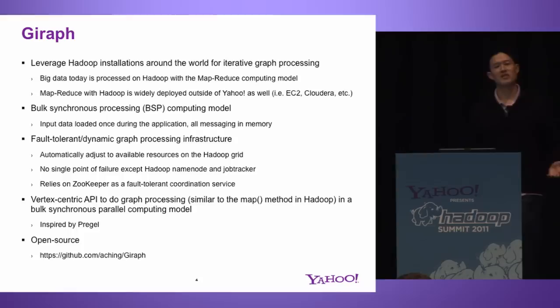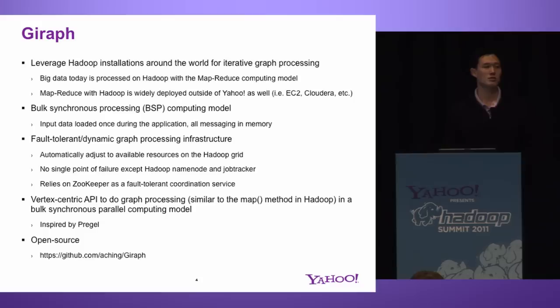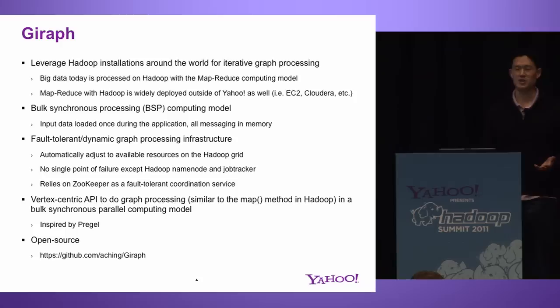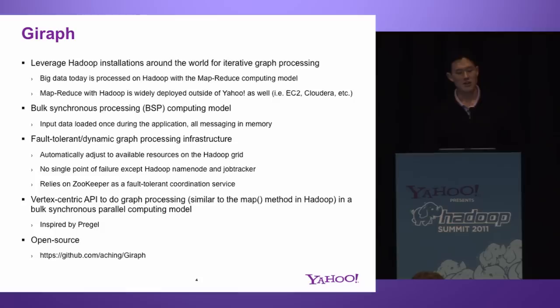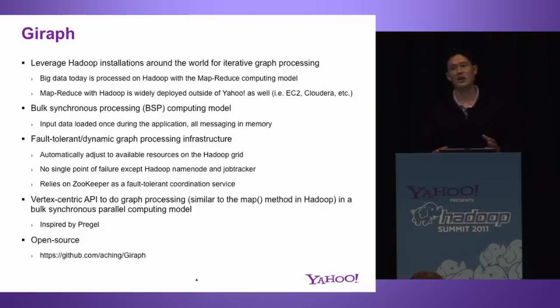This is what we did with Giraffe. We said: there are a ton of Hadoop installations around the world, and we want to leverage that for iterative graph processing. We use the Hadoop framework as a resource allocator and can run on top of your existing Hadoop infrastructure. The deployment is very wide at Yahoo with tens of thousands of machines, as well as outside of Yahoo — you could run on EC2 and other companies as well. Giraffe leverages the Bulk Synchronous Parallel model by Valiant, which is really the key to the fault tolerance built into Giraffe. With this model, we load the input data once during the application, and everything at that point happens in memory.